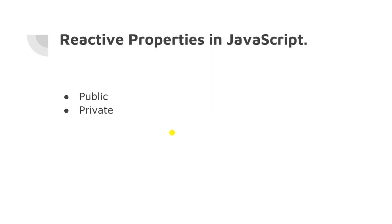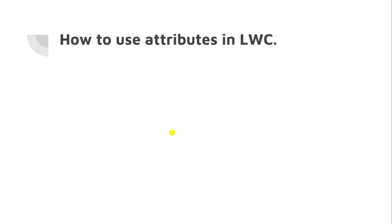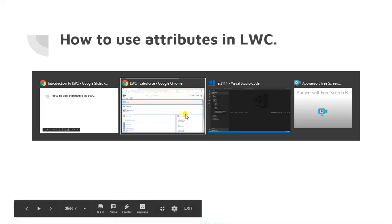Reactive properties in JavaScript fall into two types: public and private. Public properties are annotated with @api and allow passing variables from a parent component to a child component. Private properties are annotated with @track and are only accessible within their own component. We'll walk through the folder structure, then wire properties, API, track, and attributes before the demo.